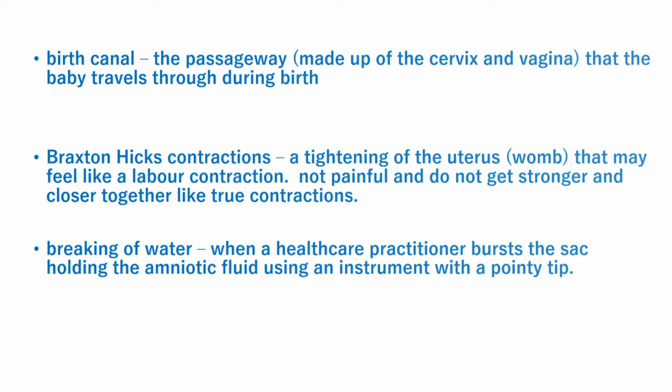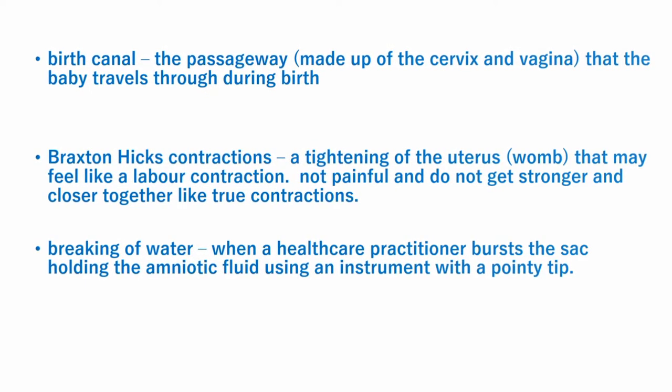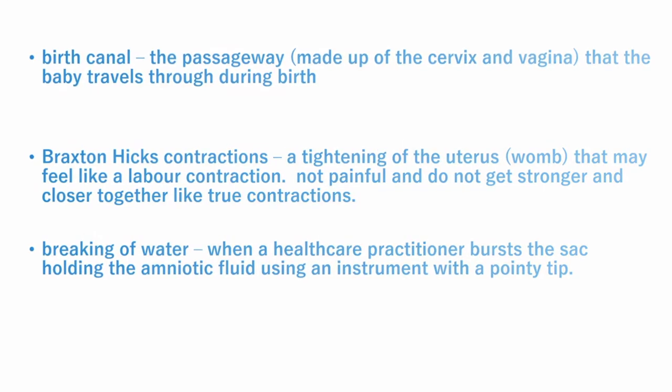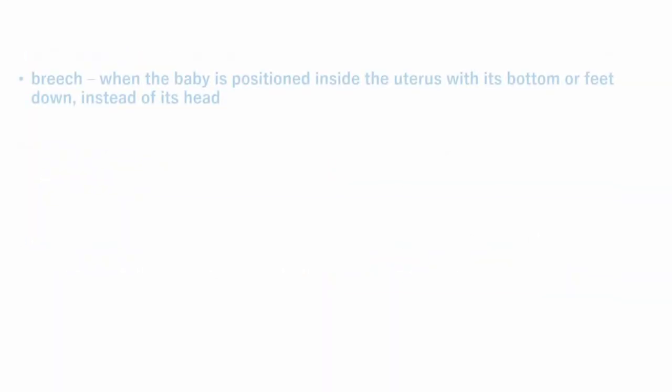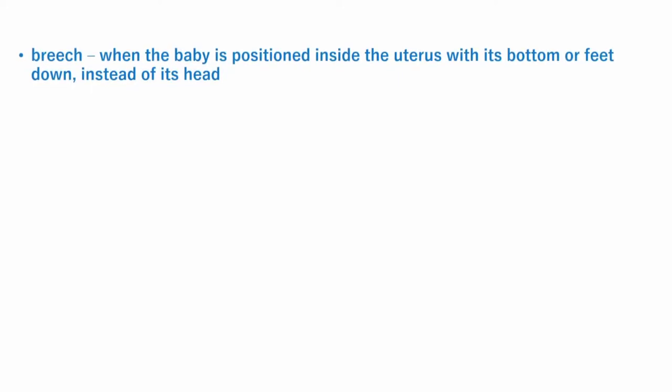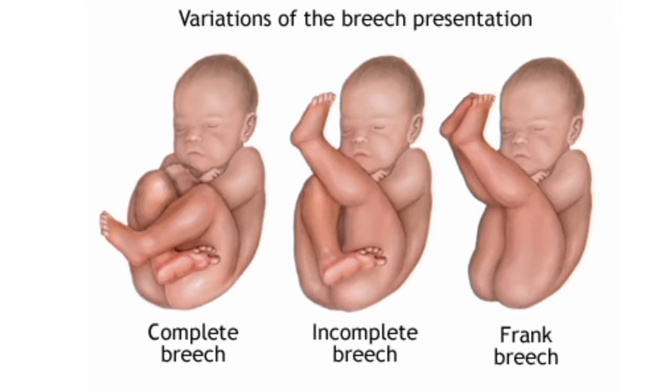Breaking of water occurs when a healthcare practitioner bursts the sac holding the amniotic fluid using an instrument with a pointy tip. Breech presentation: when the baby is positioned inside the uterus with its bottom or feet down instead of the head. Variations include complete breech, incomplete breech, and frank breech. In complete breech, both of the baby's knees are bent and the feet and bottom are close to the birth canal. In incomplete breech, one of the baby's knees is bent and the foot and bottom are close to the birth canal. Frank breech is the most common type, where the baby's legs are folded flat up against the head and the bottom is closest to the birth canal.